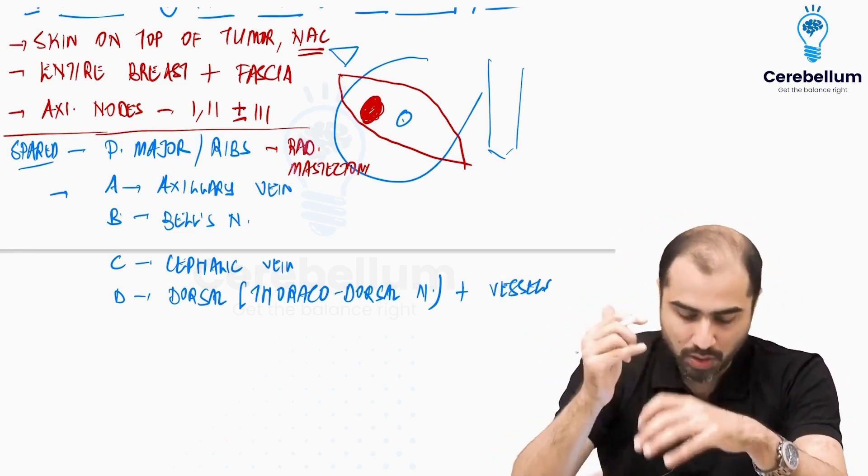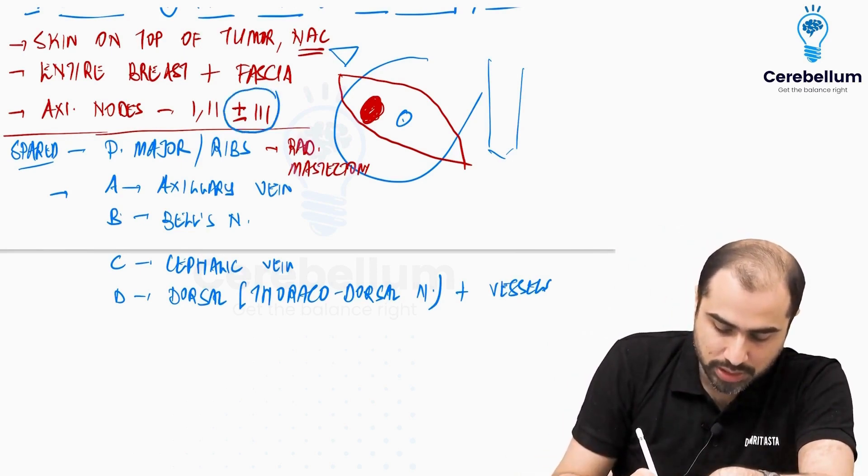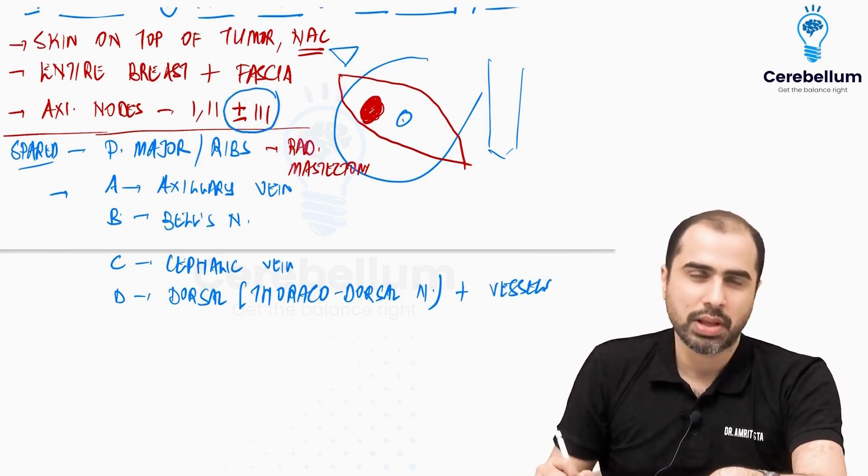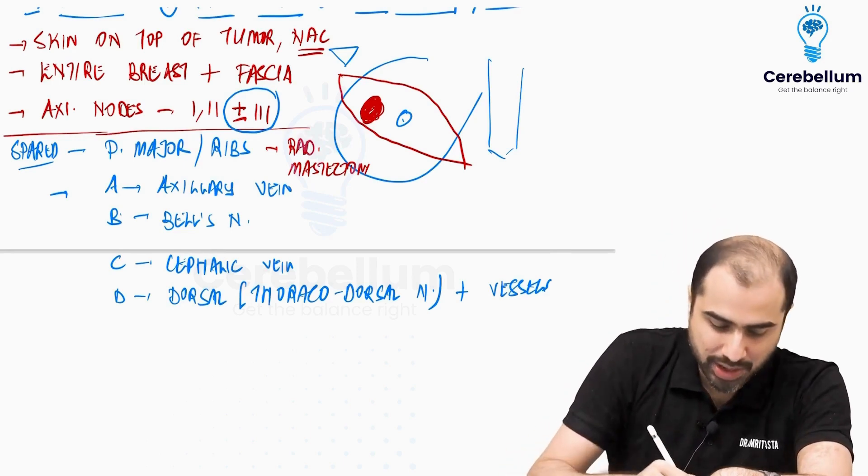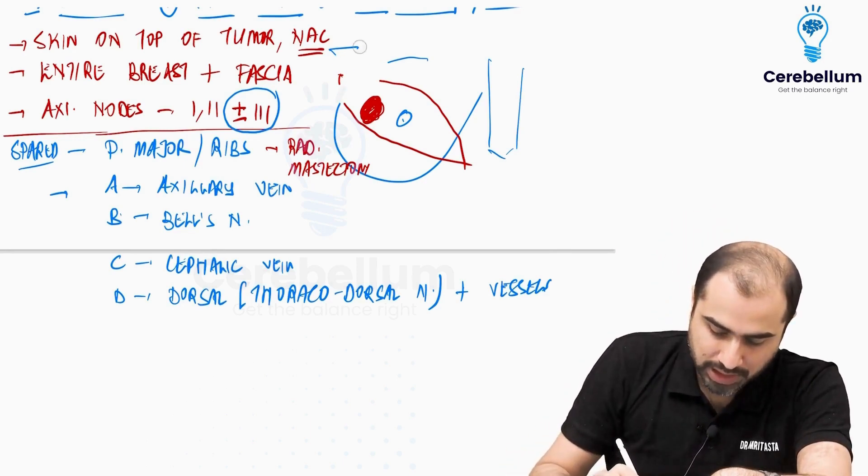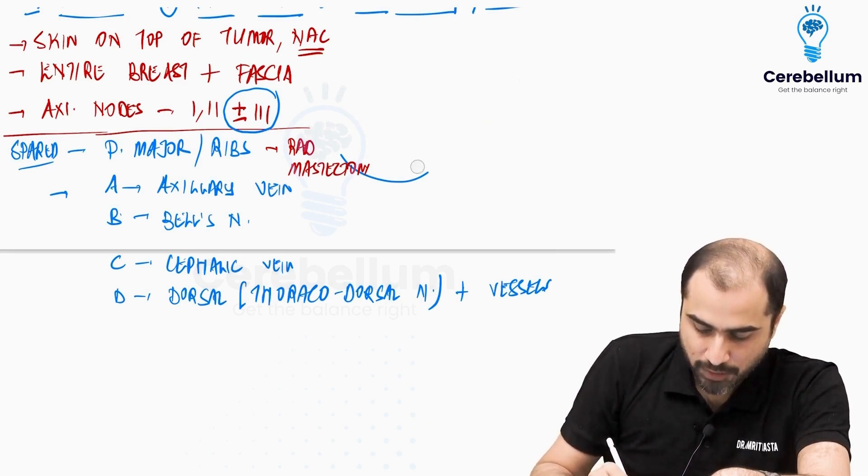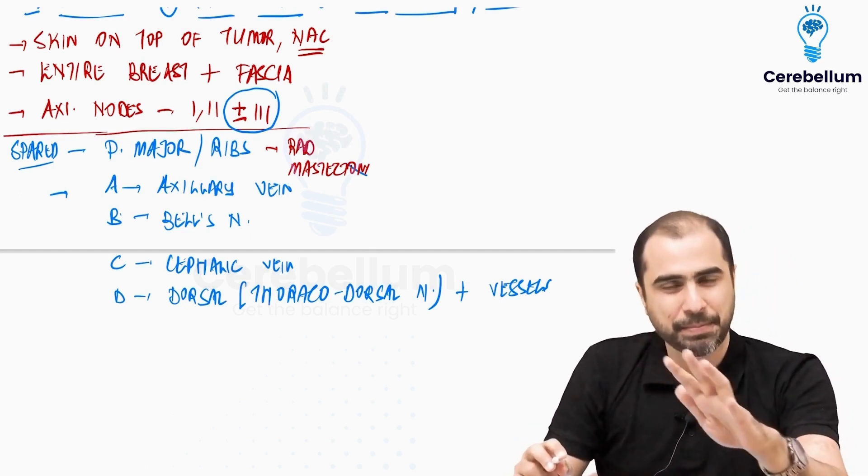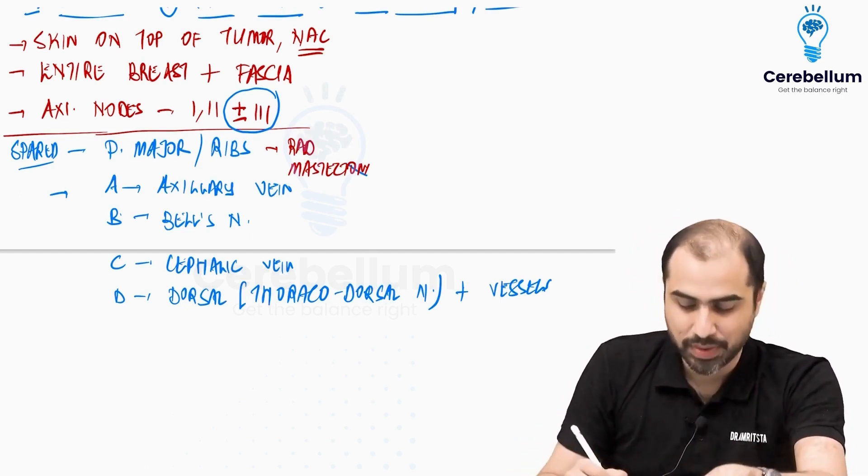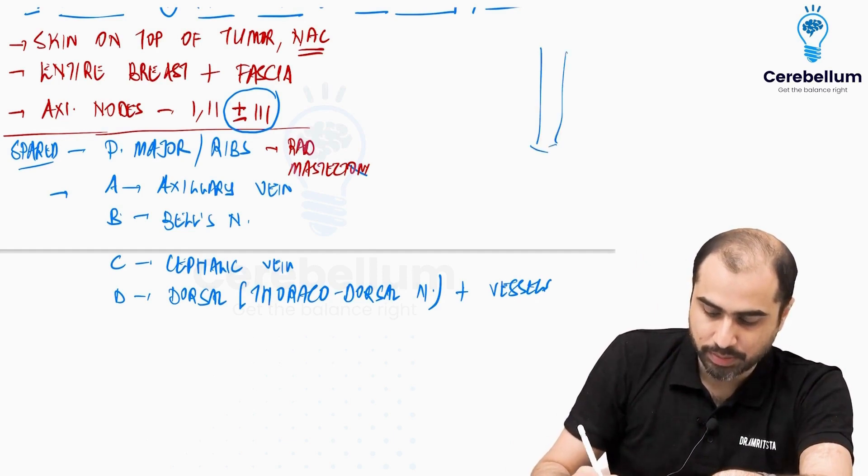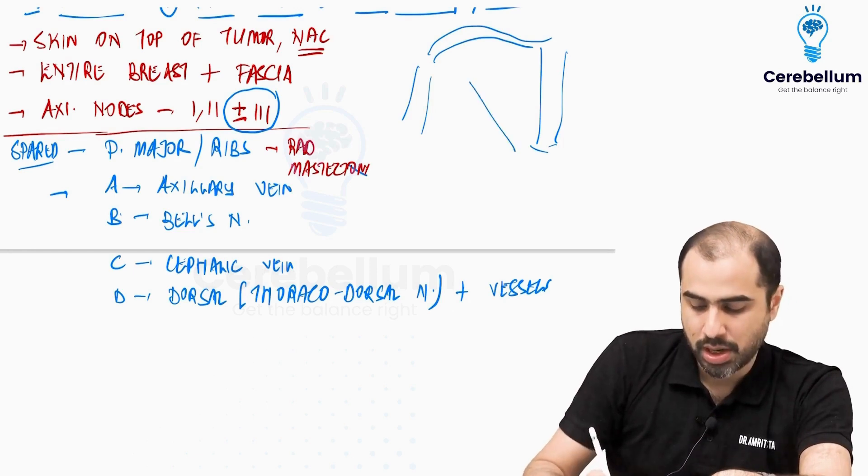Now I told you level 3 axillary nodes may be removed or they may not also be removed. Now what decides whether they are going to be removed or not is what you need to know. And what are the variations of MRM? Really speaking, if you understood the fundamental of anatomy, then understanding the variations becomes very easy. Now let's say this is the sternum and this is the clavicle and this is the humerus over here and there is a pec major on top. I have removed the whole breast and now I see the pec major.